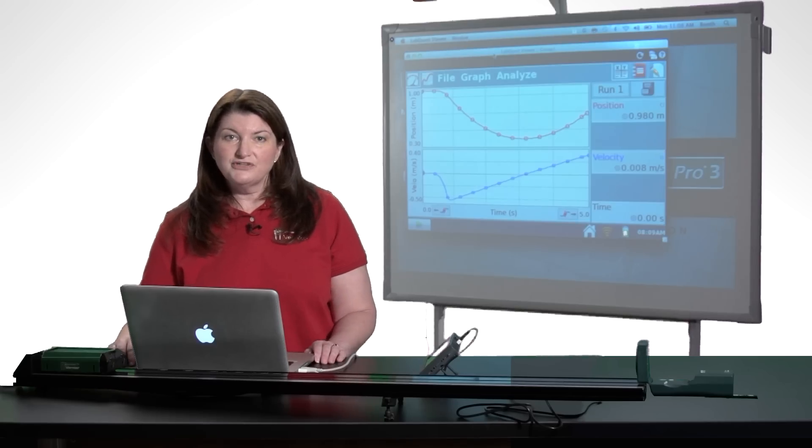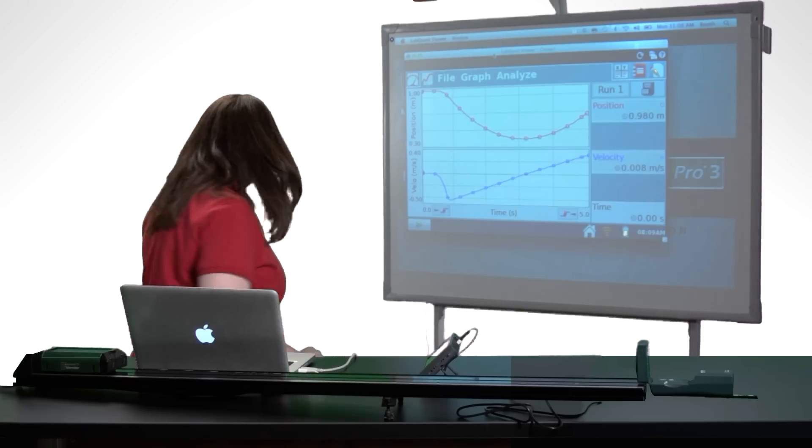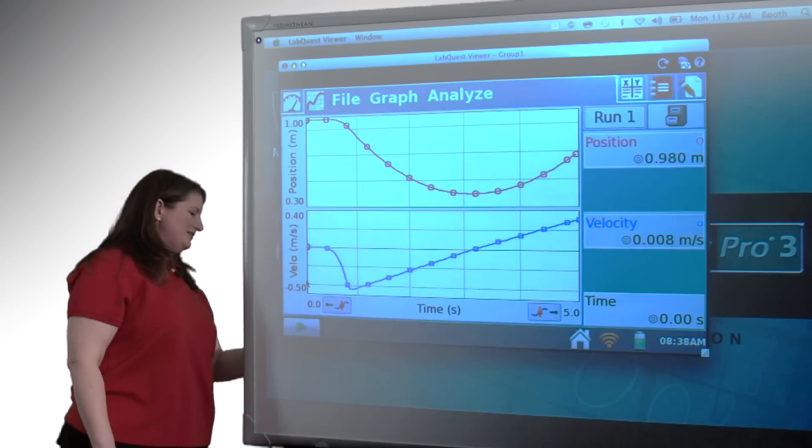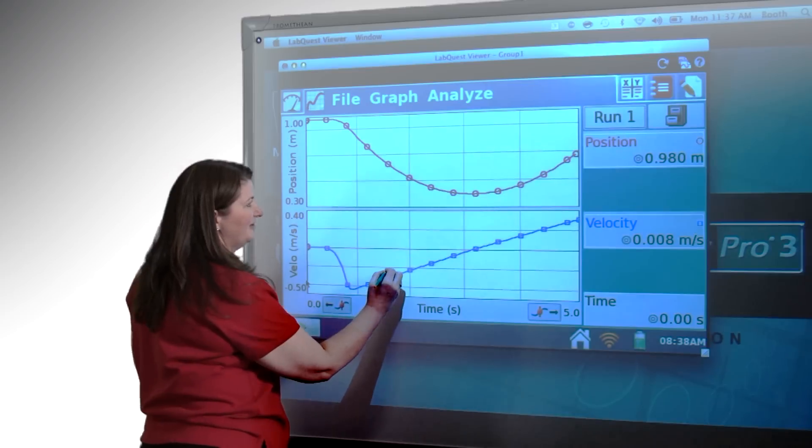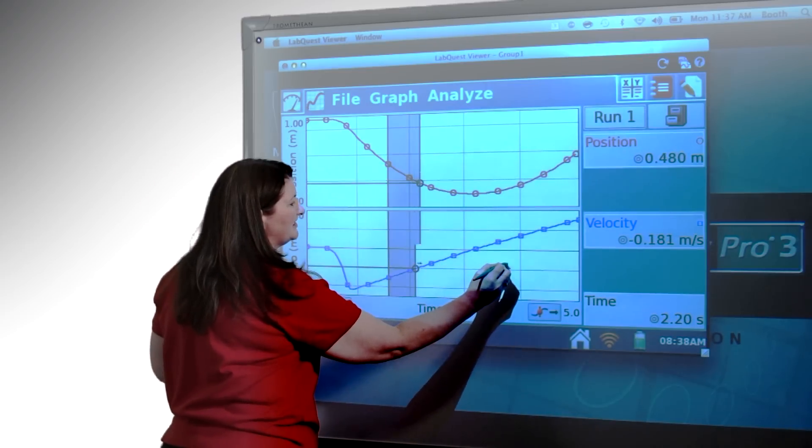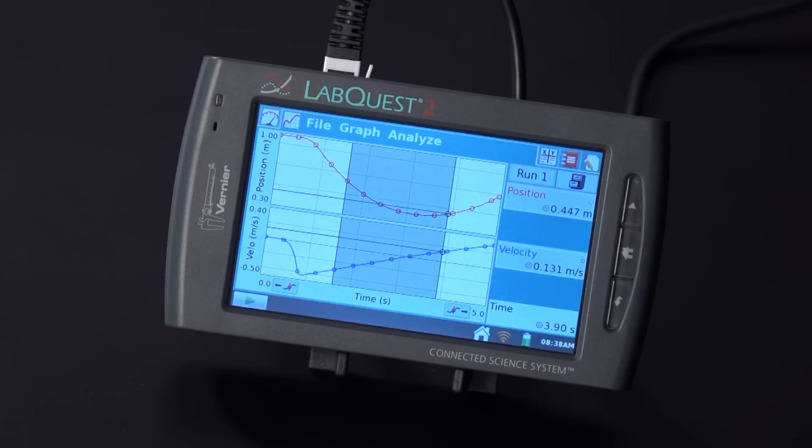Let's go back to the interactive whiteboard to analyze this data. I want to determine the acceleration of the cart on the track. To do that, I'm going to do a curve fit on the velocity graph. So I'm going to select part of the linear region of that graph and as you can see, whatever I'm doing here is controlling the LabQuest screen in the same way.